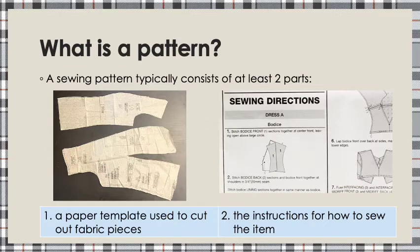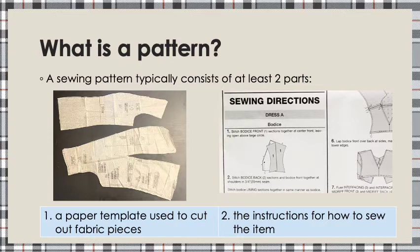A pattern in sewing is a document that usually comes in an envelope, unless you have a PDF version, which we'll talk about later. A pattern includes at least two different parts. You will find paper pattern pieces that you will use to lay out onto your fabric, and then you cut around those to cut out your fabric. Usually these are printed on really cheap tissue paper because they need to be very big, and they'll have a whole bunch of different pattern markings and other information on them. The other thing you'll find inside the pattern is the instructions for how to sew the item, and also some other important information regarding how things get stitched together.